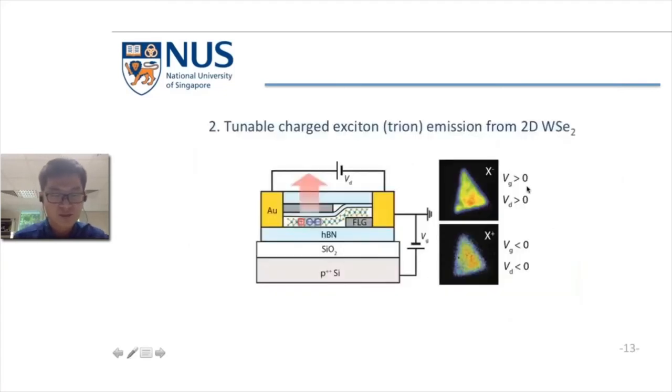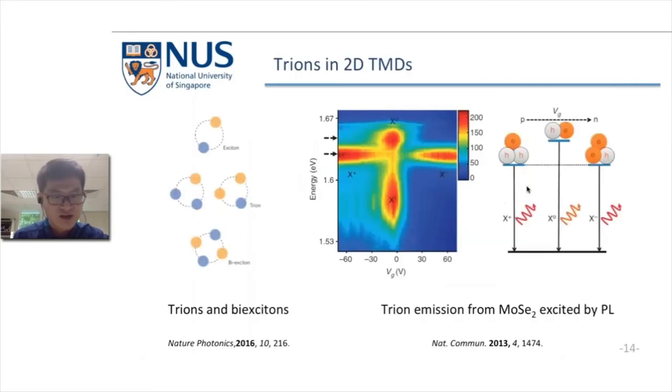Next, I'll talk about another topic where we achieved charged exciton emission from 2D tungsten diselenide. Trions are bound excitons with additional charge, either electron or hole.